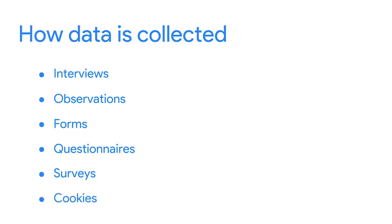One thing to note: data that's generated online doesn't always happen directly. Have you ever wondered why some online ads seem to make really accurate suggestions? Or how some websites remember your preferences? This is done using cookies, which are small files stored on computers that contain information about users. Cookies can help inform advertisers about your personal interests and habits based on your online surfing, without personally identifying you. As a real-world analyst, you'll have all kinds of data right at your fingertips, and knowing how it's been generated can help add context to the data.